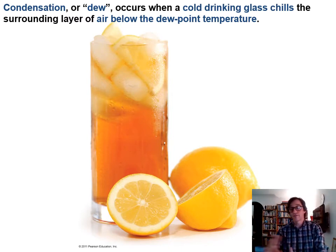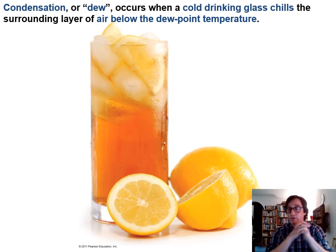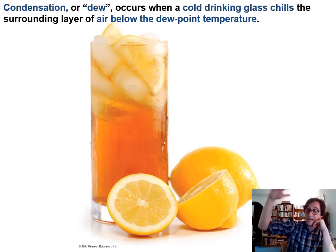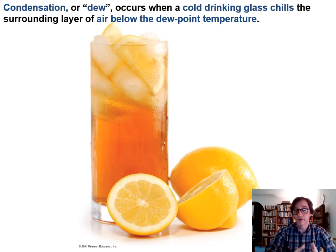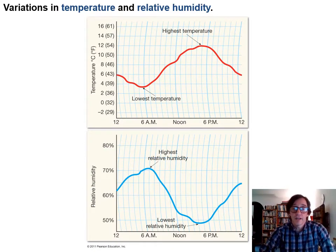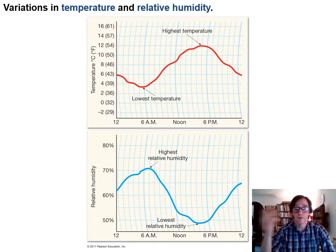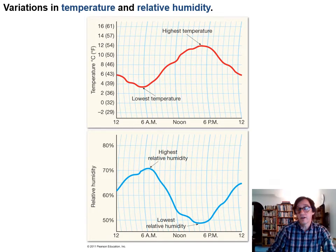The same thing happens in the atmosphere. As you rise in elevation — one, two, three, four, five kilometers up — the temperature gradually decreases. Eventually you reach the condensation level or saturation point, and that's basically where we have clouds. The cloud base is where the temperature is low enough that the air is now saturated at 100% humidity. The next slide shows two charts: temperature in red and humidity at the bottom — they're inversely correlated. When temperature is low, humidity is high; when temperature is high, humidity is low.